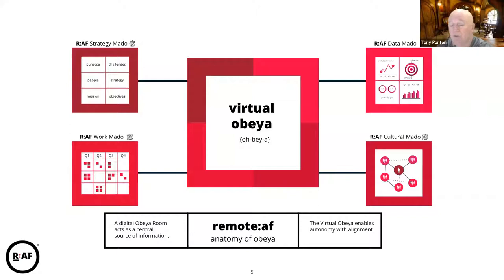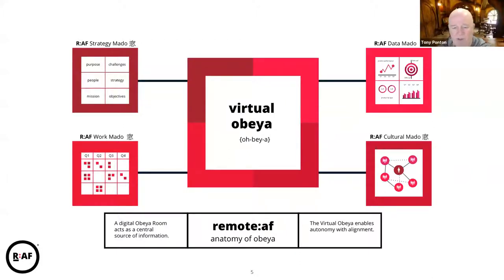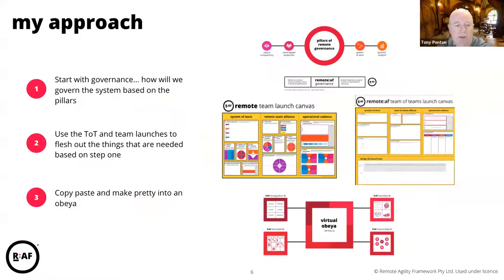The four zones are strategy, work, data, and the cultural Mato. In short, the Obeyer really is a big room that acts as a central source of information for your organization, enabling autonomy and alignment. When we were in physicality we used to do that in big rooms; now we have to think about that in digitality. The virtual Obeyer becomes something integral to allowing us to understand where we're at, what's going on, and being able to pull that information to make expedient decisions.